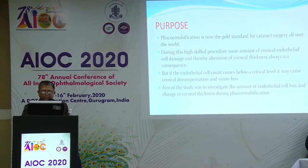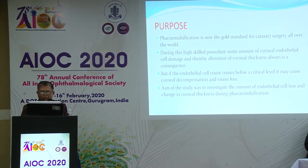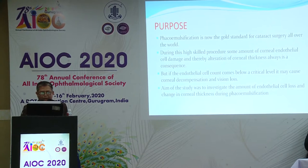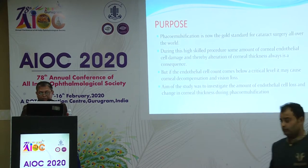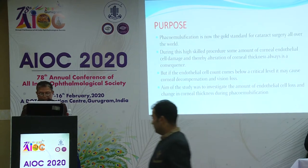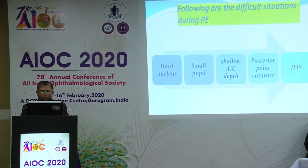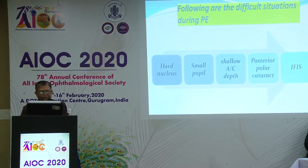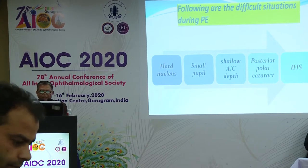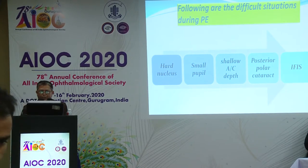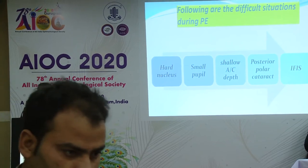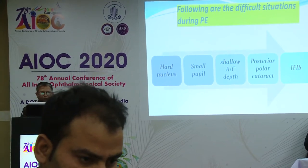The aim of the study was to investigate the amount of endothelial cell loss and changes in corneal thickness during phacoemulsification, particularly in difficult cases. The difficult situations we addressed included: hard nucleus, small pupil, shallow anterior chamber depth, posterior polar cataract, and intraoperative floppy iris syndrome.